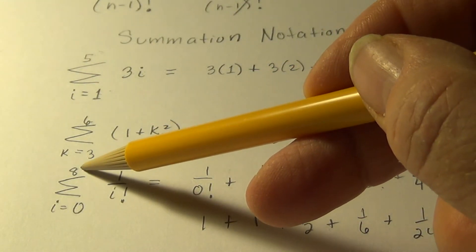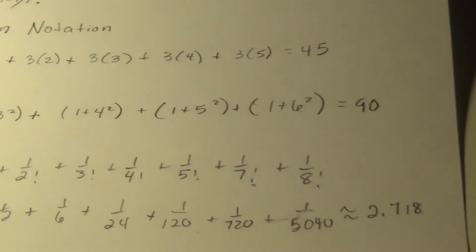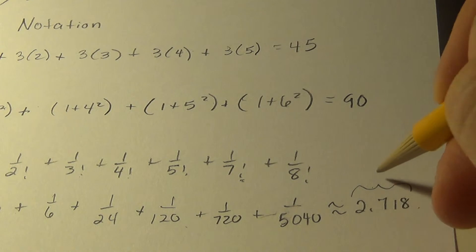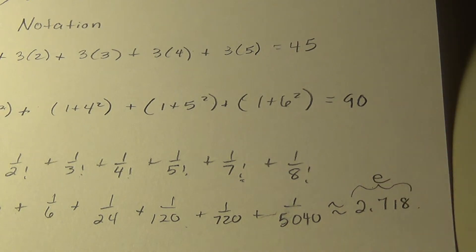If we took this progression out further, went to say 100 or 1,000, it would become closer and closer. This is the irrational number e. How cool is that?